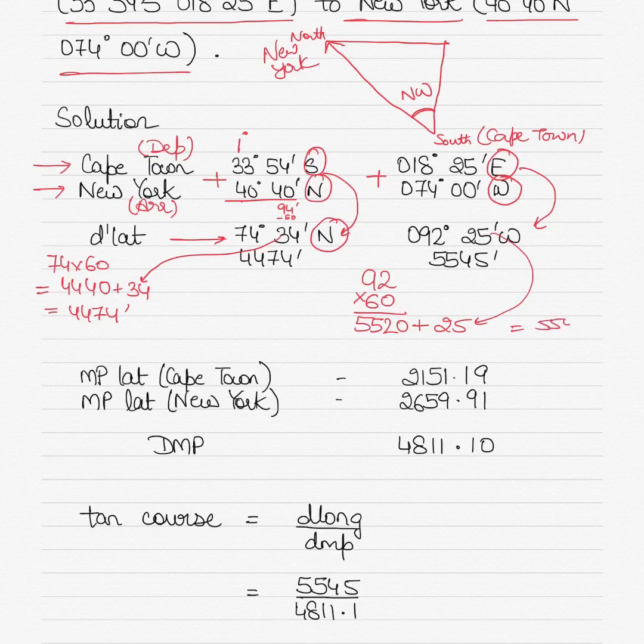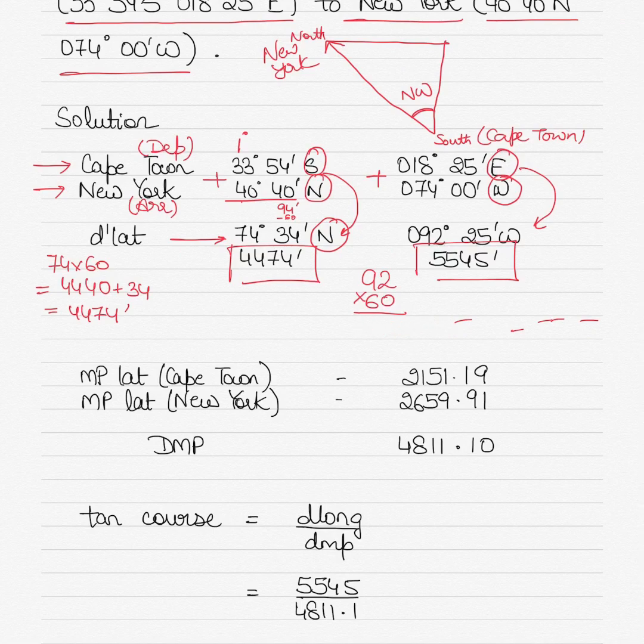If I can draw this diagram here, this will give you a better sense. You are going from south to north like this—this is south and this is north. So this is a northwesterly direction. This is Cape Town and this is New York, figuratively speaking, just to get some concepts drawn here.